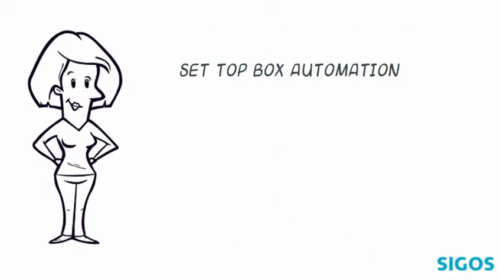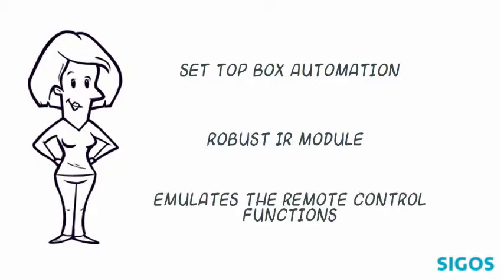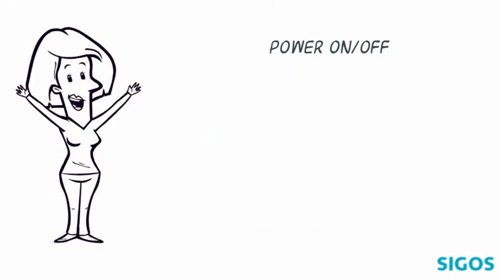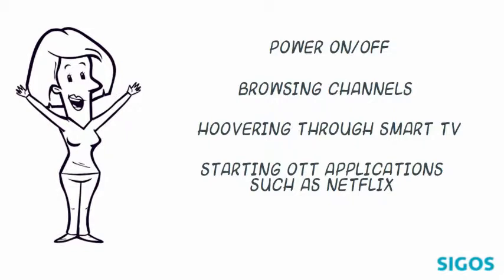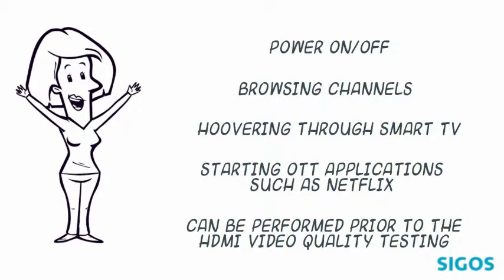Setup box automation is done via a robust infrared module that emulates the remote control functions such as power on, off, browsing channels, hovering through smart TV, starting OTT applications such as Netflix, and so on, which can be performed prior to the HDMI video quality testing.